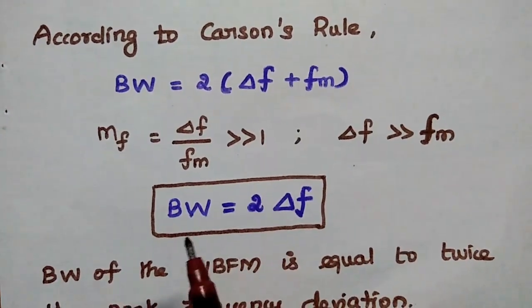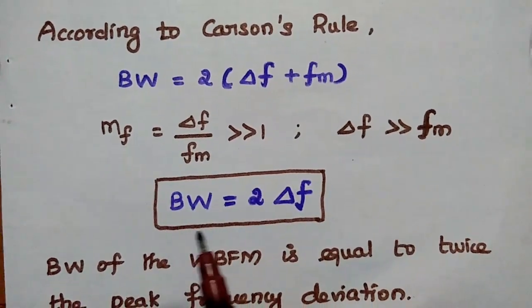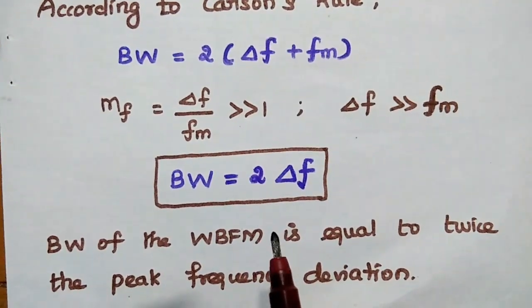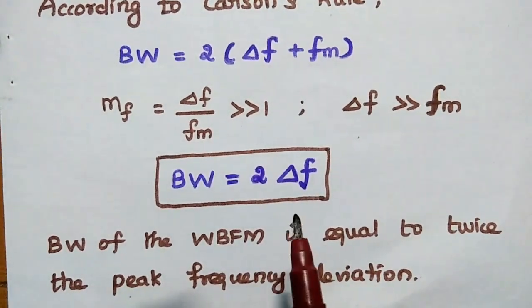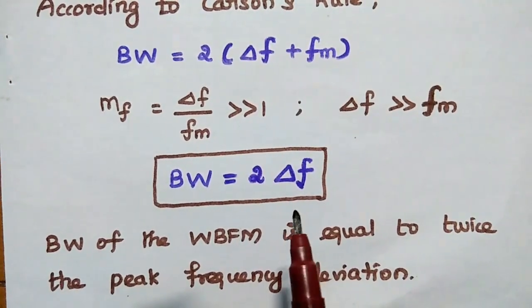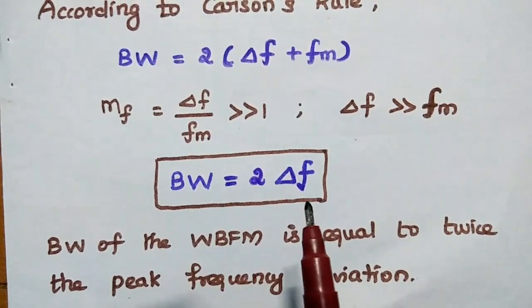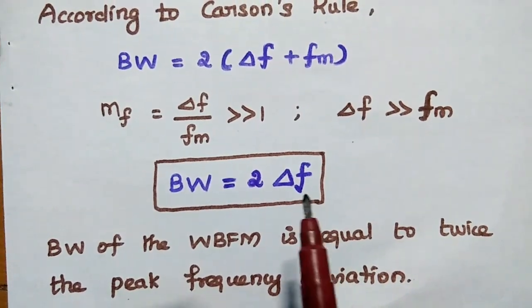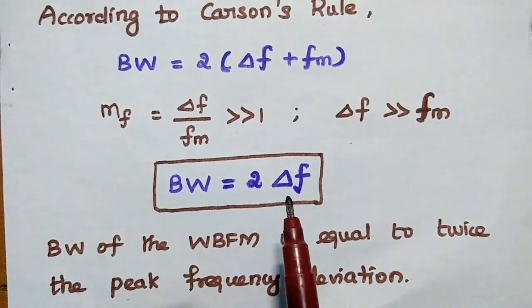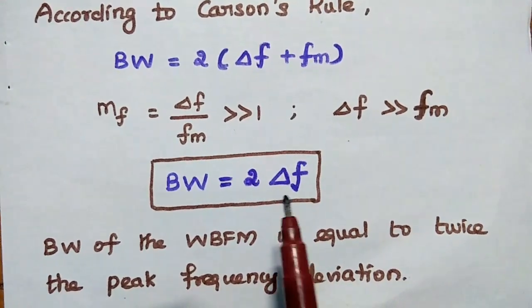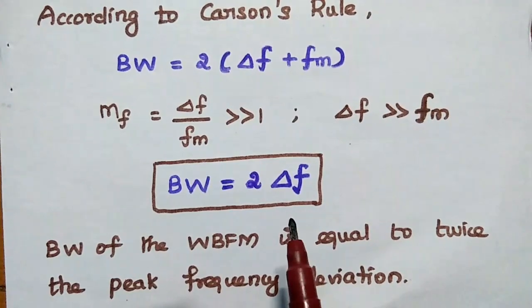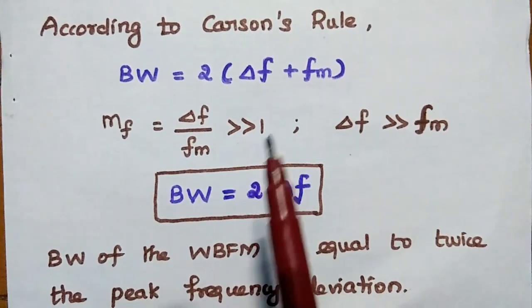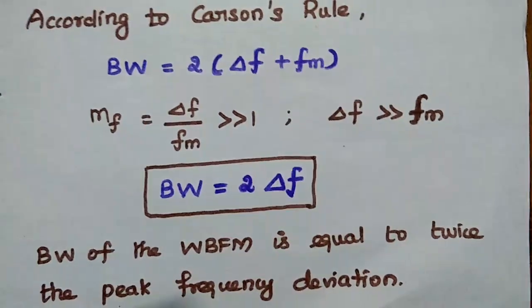Finally, we obtain the bandwidth of wideband frequency modulation as equal to twice the peak frequency deviation. This is the bandwidth of the wideband frequency modulated signal using Carson's Rule.